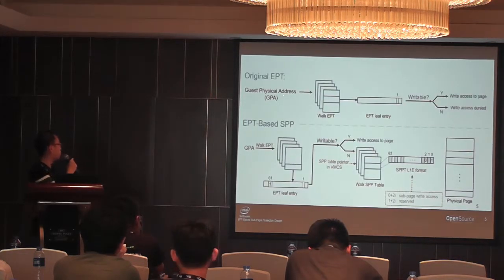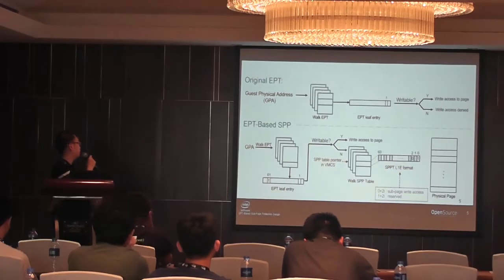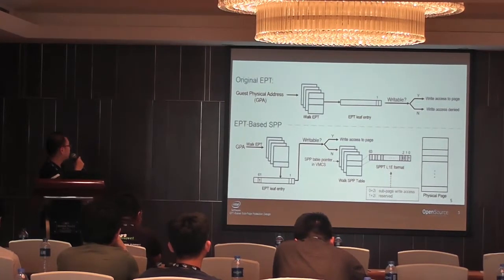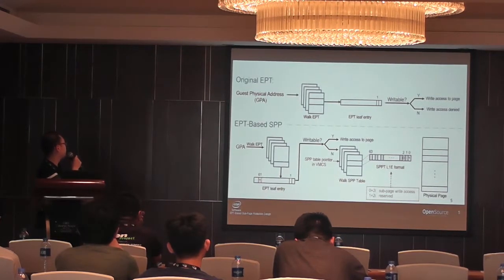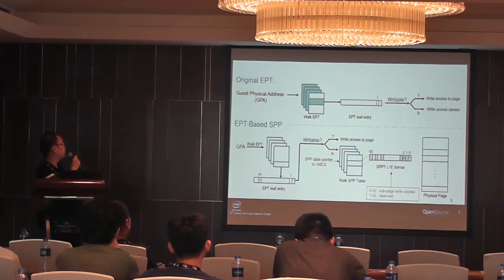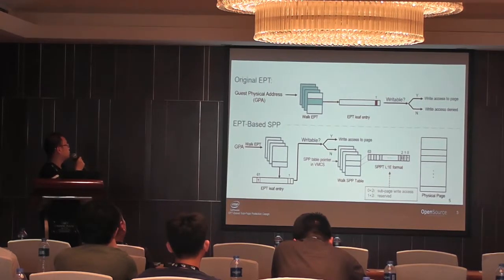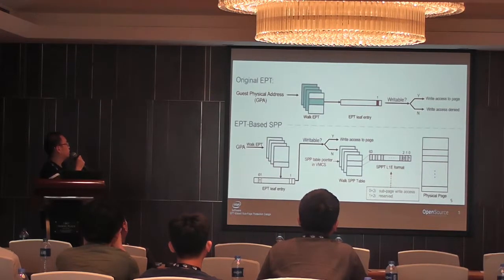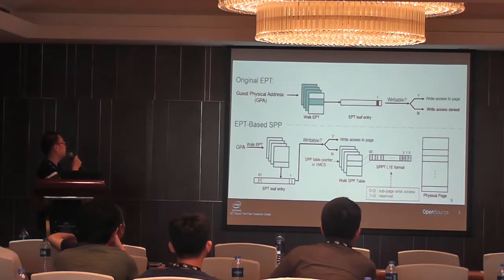Next is the overall picture of the sub-page protections. Before SPP, the EPTs are traversed first. In the original EPTs, to convert the guest physical address to the host physical address, we walk a 4-level EPT page table until we find the EPT entry. In that entry, we read the writable bit. If it is writable, the whole page allows write access. Otherwise, write access is denied for that 4K page.